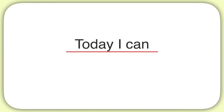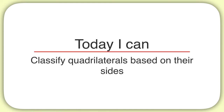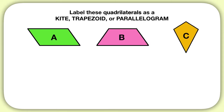Today we are learning how to classify quadrilaterals based on their sides. Let's say you were asked to label these quadrilaterals as either a kite, a trapezoid, or a parallelogram.